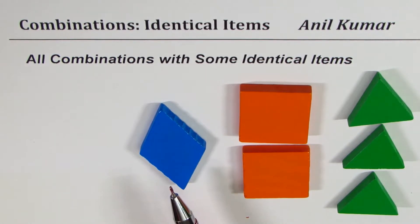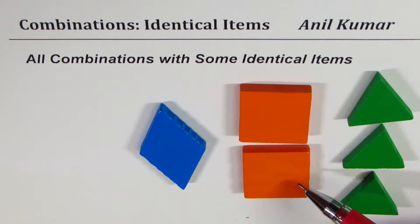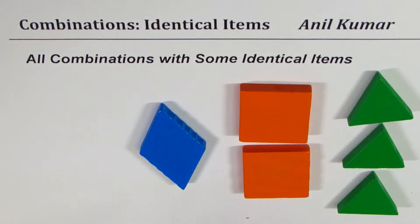To begin with, let's take an example. Here I have three types of elements: one is in the shape of a diamond, two are in the shape of a square, and we have three triangles. Some are identical as you can see - these three are identical triangles and we also have two identical squares.